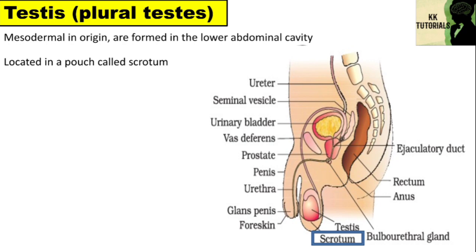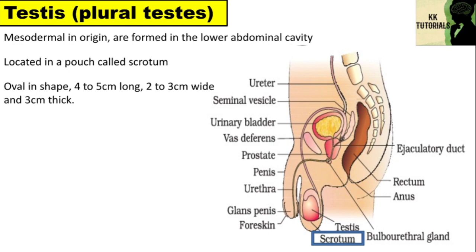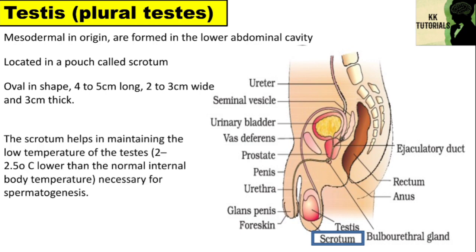Each testis is oval in shape, 4–5 cm long, 2–3 cm wide and 3 cm thick. The scrotum helps in maintaining a low temperature of the testes — 2 to 2.5 degrees Celsius lower than the body temperature — which is necessary for spermatogenesis, i.e., the formation of sperms.